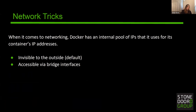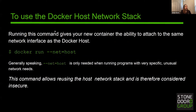That leads us into the next section on networking tricks. When it comes to networking, Docker has an internal pool of IPs that it uses for container IP addresses — these are invisible to the outside by default and accessible via bridge interfaces. There are going to be times that you find yourself wanting to create a new container and connect it to a network stack that is already in existence. I want to show you how to use a host network stack. We would run the command 'docker run --net=host' with the rest of the information. By running this command, we're giving our new container the ability to attach to the same network interface as the Docker host.